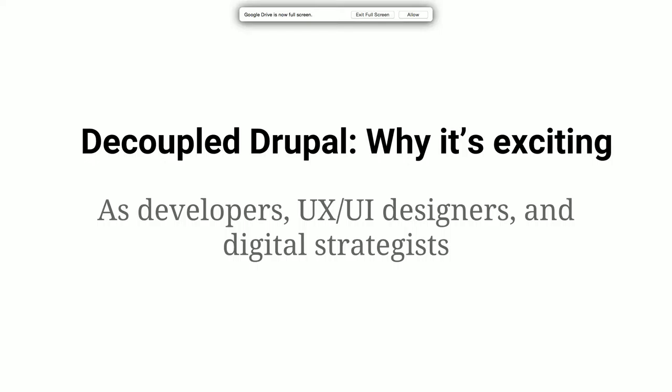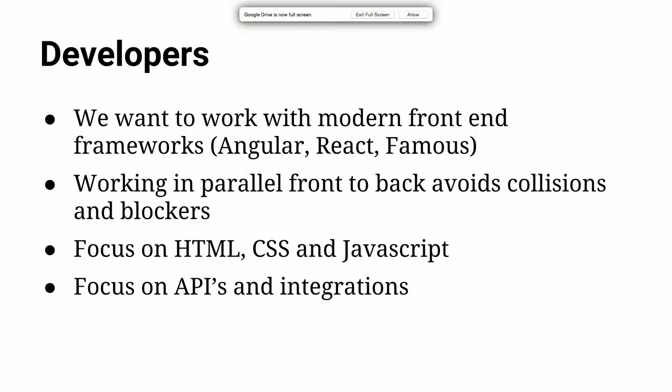Why is this exciting to us as developers, designers, and digital strategists? For developers, there are new technologies like Angular, React, and Famous that lean heavily into JavaScript, which we want to take advantage of — and Drupal doesn't always accommodate that directly. A decoupled model also allows us to separate concerns so we can focus our efforts in a more distributed way — front-end developers and back-end developers working on different parts of the project. You can have a mock API for your data model, back-end developers build the API, and front-end developers build the front-end without running into each other.